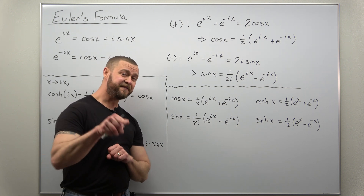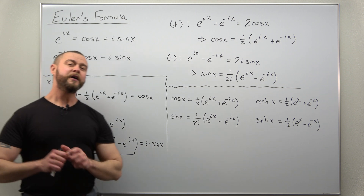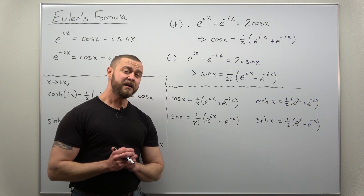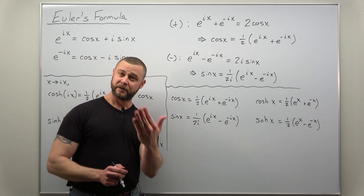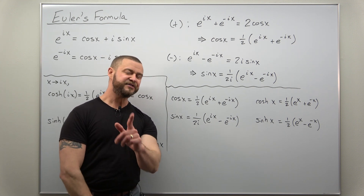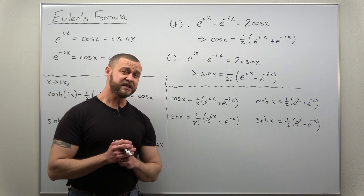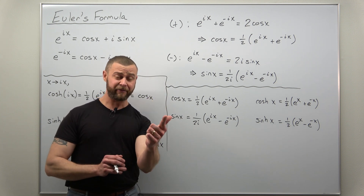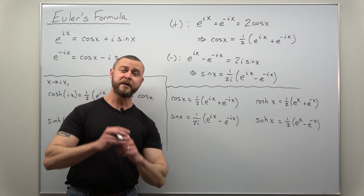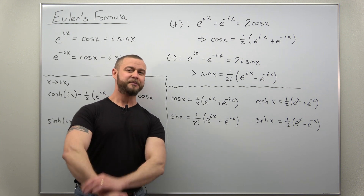In a follow-up video we're going to see the main use of all these relationships — establishing a way to find values for trig functions beyond the usual range of -1 to 1. We'll solve sine(x) = 2. Hope you enjoyed this video establishing Euler's formula and everything related to it. Those follow-up videos will be linked below. If you enjoyed the content, support the channel and hit the subscribe button.